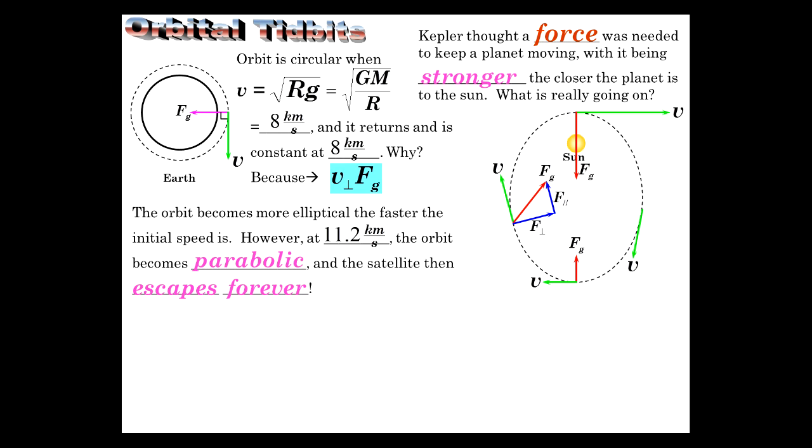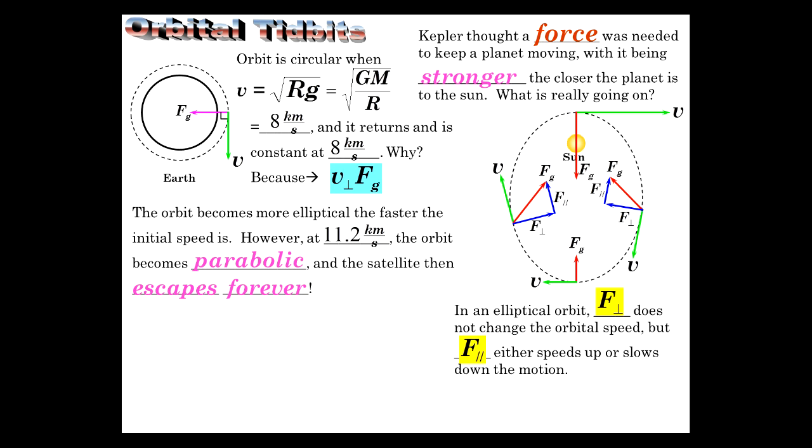On the other side, coming around, we have the same idea, there's the motion with the force. Part of the force is going to be acting away from the direction of motion. Where's the perpendicular? And here's the parallel, away from the direction of motion, opposite the motion, slowing it down. So the perpendicular does not change the orbit speed, but the parallel either speeds it up or slows it down, and that's what causes these speeds to actually change as it makes its orbit.